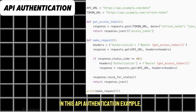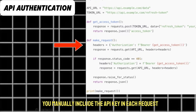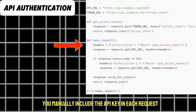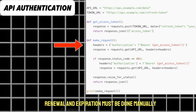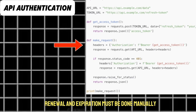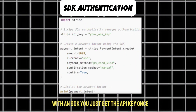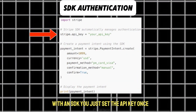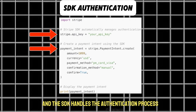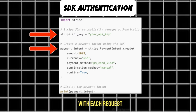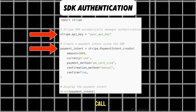In this API authentication example, you manually include the API key in each request. Handling authentication, bearer token renewal, and expiration must be done manually. With an SDK, you just set the API key once, and the SDK handles the authentication process with each request. There is no need to manually add headers for each API call.